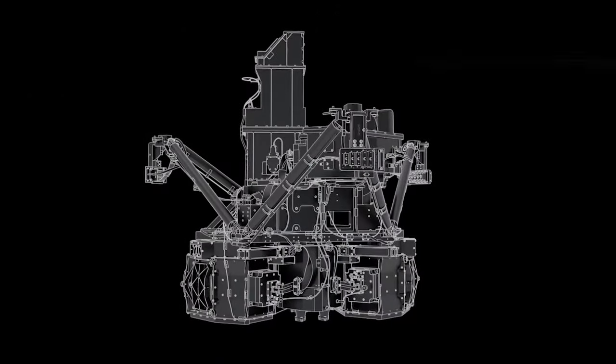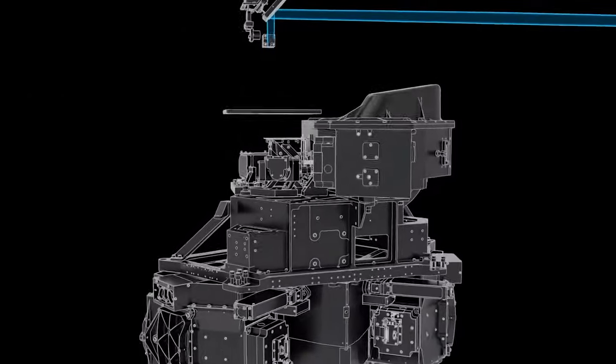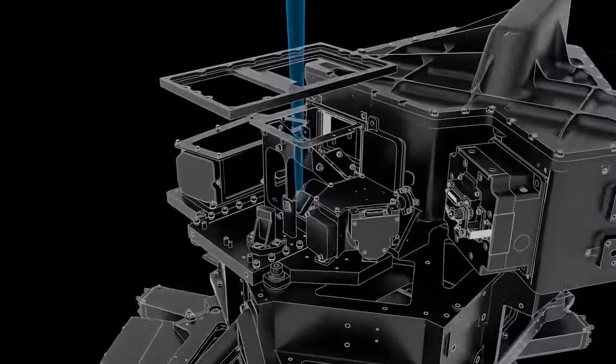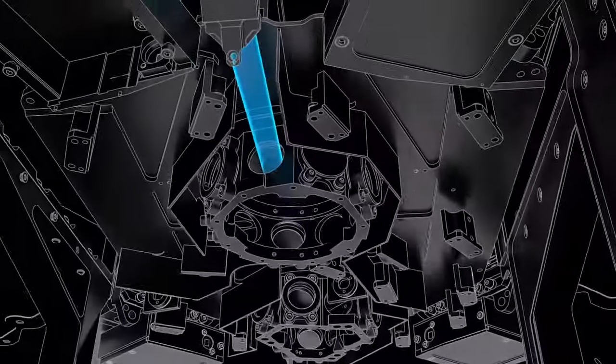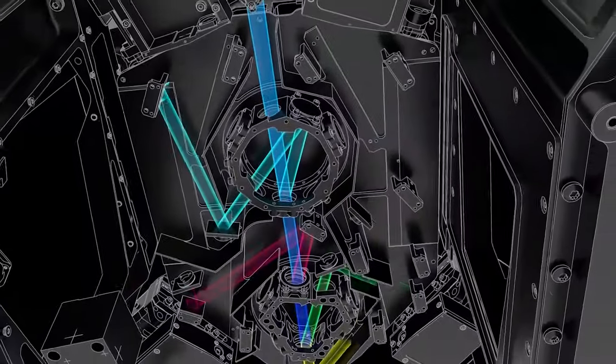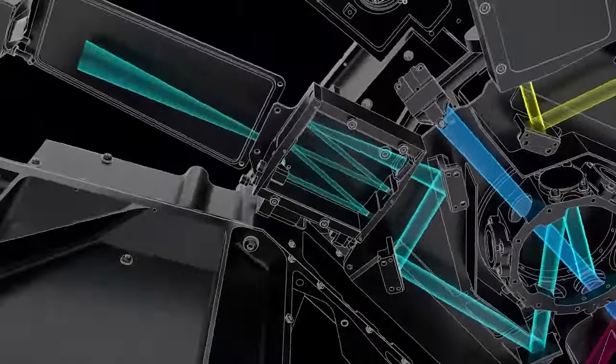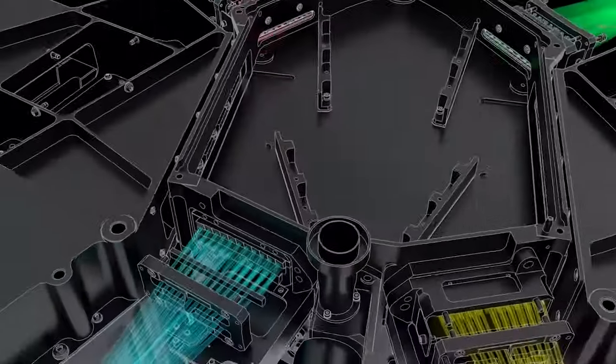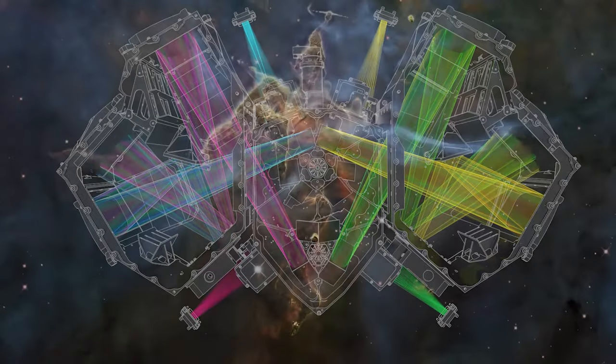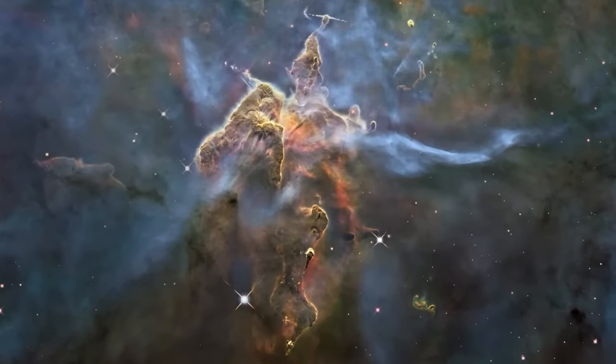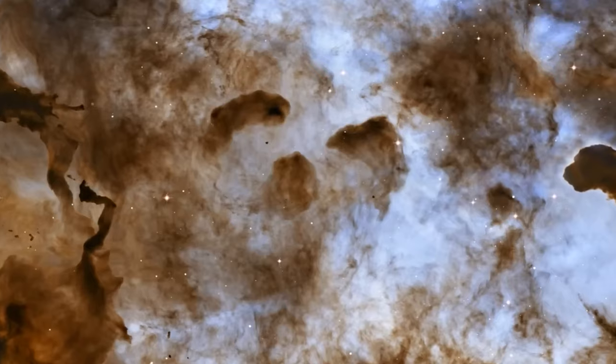The James Webb Space Telescope uses infrared light to probe the universe, since this wavelength is undetectable to the human eye and allows it to capture the faint light emitted by ancient stars and galaxies. With this amazing capability, the observatory can literally go back in time to 13.5 billion years ago, challenging our preconceptions about the early formation of the universe.